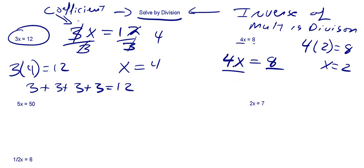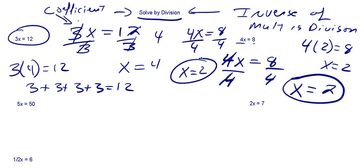So 4 times x. Your inverse operation for multiplication is division. So we're going to divide by 4. If we divide this side by 4, we've got to divide this side by 4. 4 divided by 4 is just 1. So we're left with 1x is equal to 2. Once again, you have 4x is equal to 8. Divide both sides by your x coefficient to get x is equal to 2.